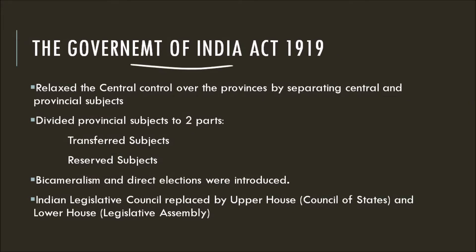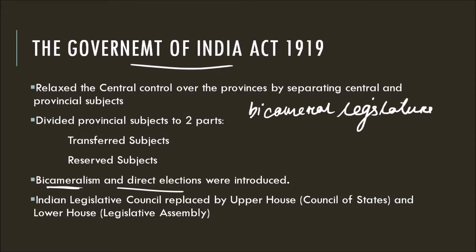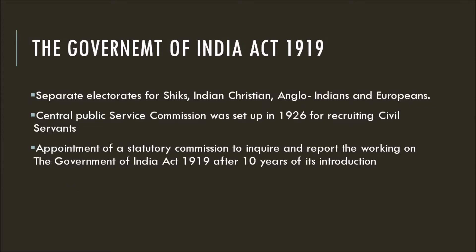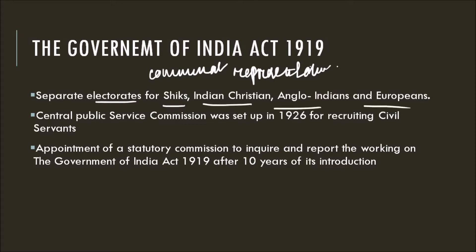This Act also introduced bicameralism and direct elections in India. After the introduction of bicameralism, the Indian Legislative Council was replaced by an Upper House and a Lower House. The Upper House was known as the Council of States and the Lower House as the Legislative Assembly. The British further expanded the principle of communal representation by introducing separate electorates for Sikhs, Indian Christians, Anglo-Indians, and Europeans — doing this only to break the unity among Indians. With this Act, the Central Public Service Commission was also set up in 1926 for recruiting civil servants.